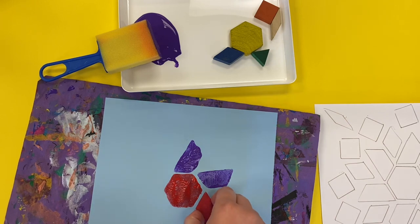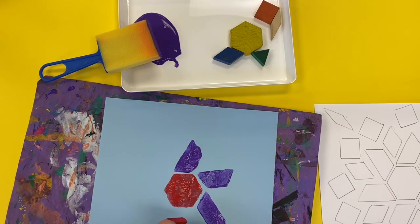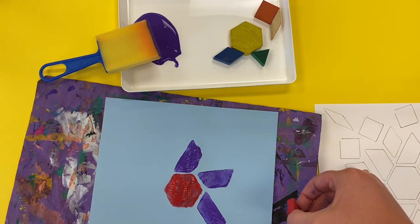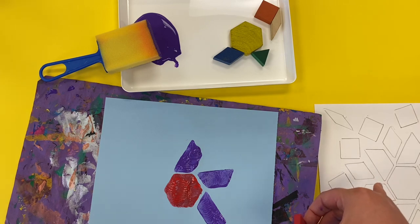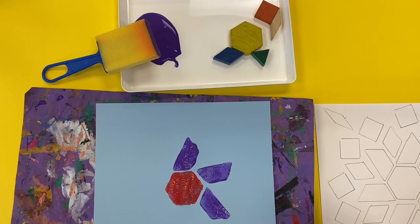And then I would just keep working my way around. I would do all of my trapezoids. And then after the trapezoids, I would look and see what the next shape is. Next shape is diamonds. Then I can move to a different table to do a new color for the diamonds. I hope you have fun printmaking today.